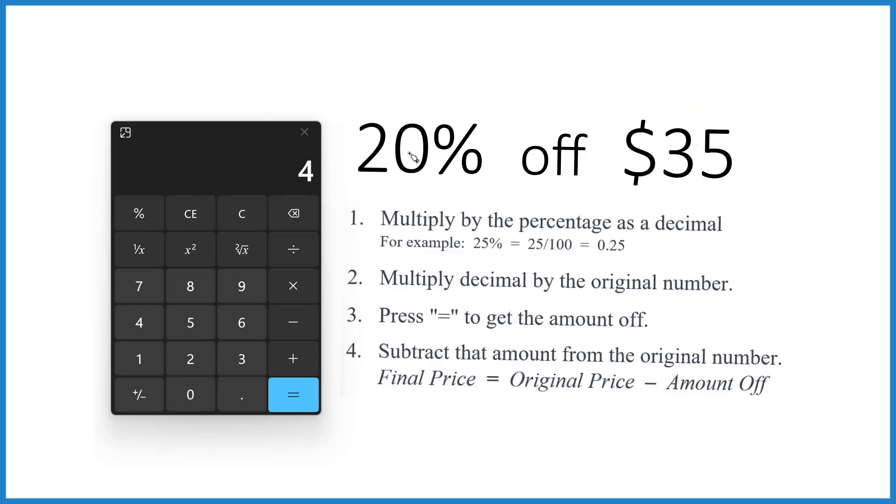So first thing, we're going to take 20%, we're going to take that 20 divided by 100 and that's going to give us a decimal.